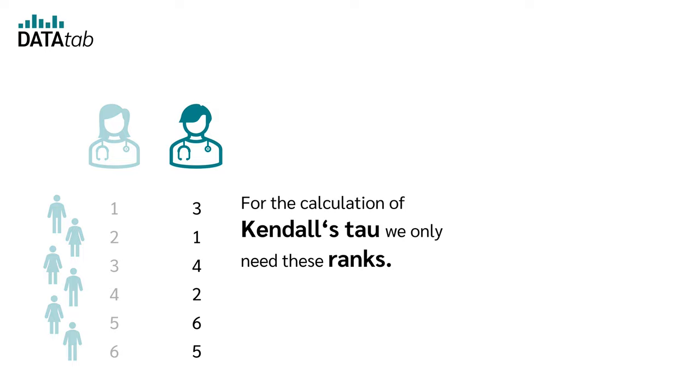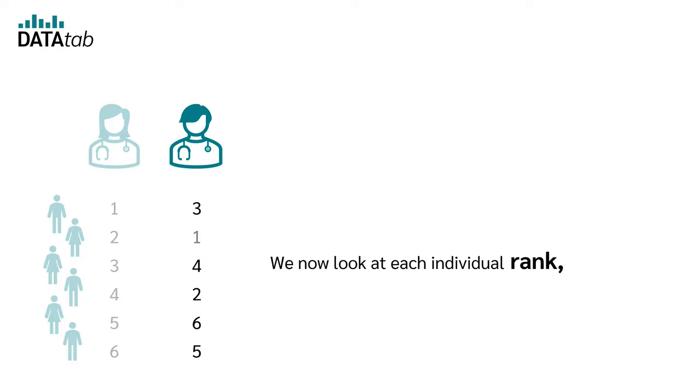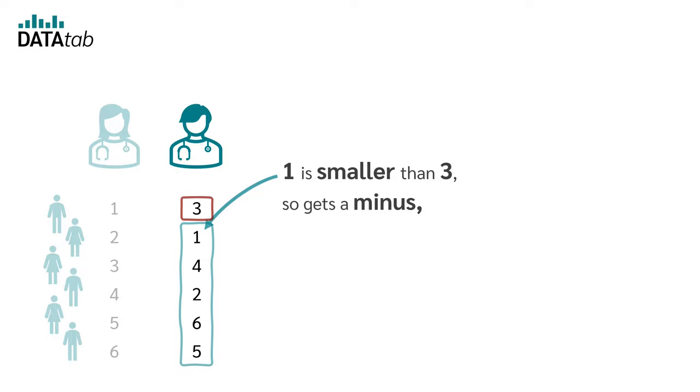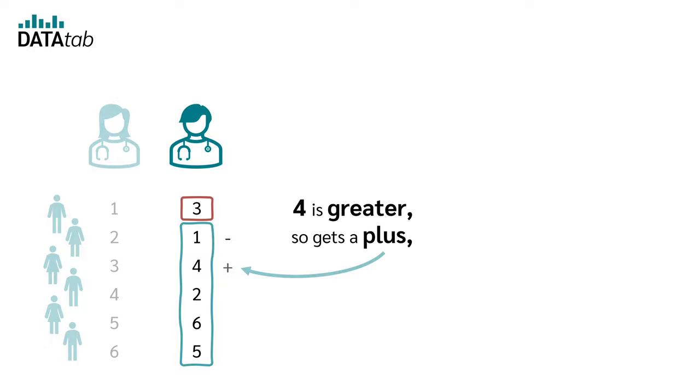We now look at each individual rank and note whether the values below are smaller or greater than itself. So we start at the first rank three. One is smaller than three, so gets a minus. Four is greater, so gets a plus.